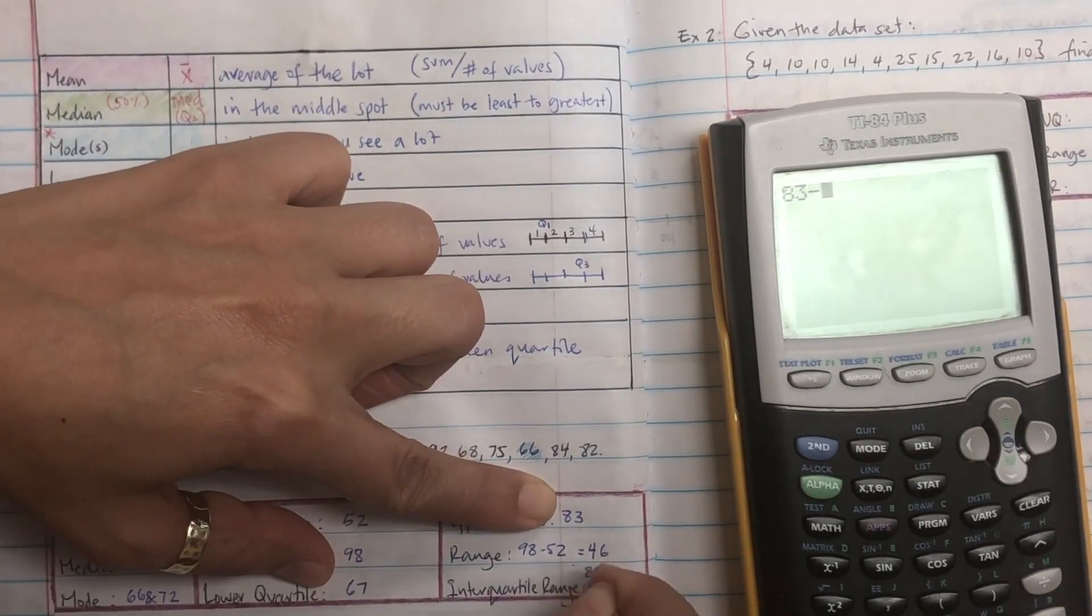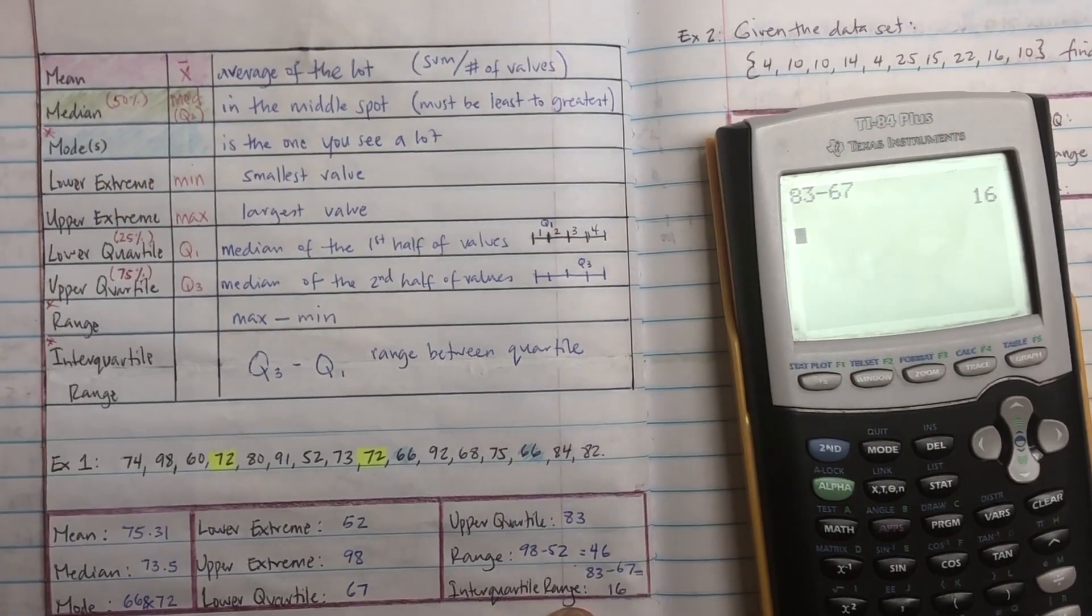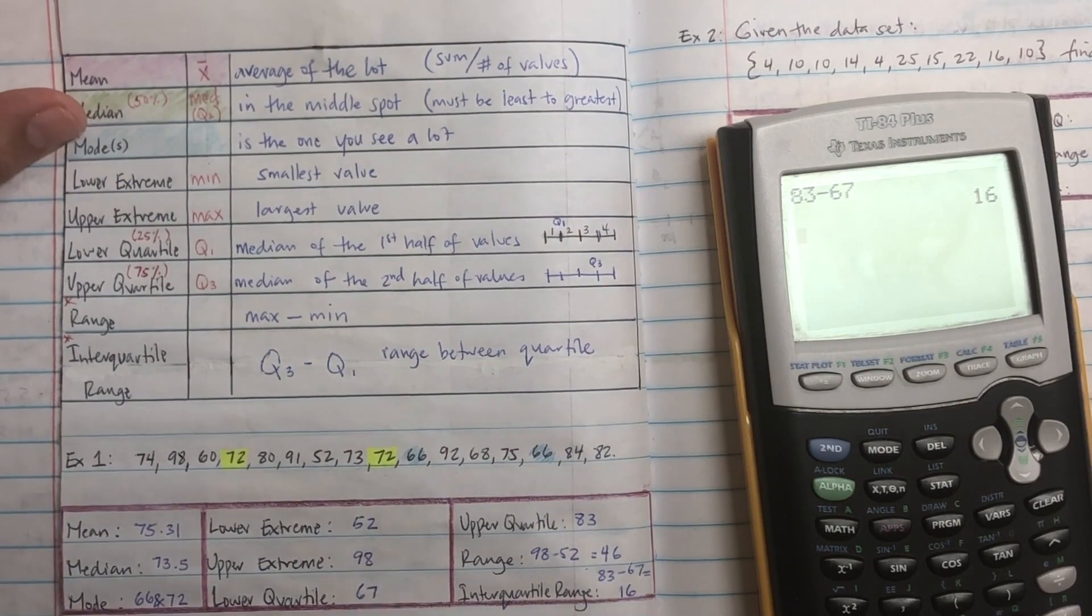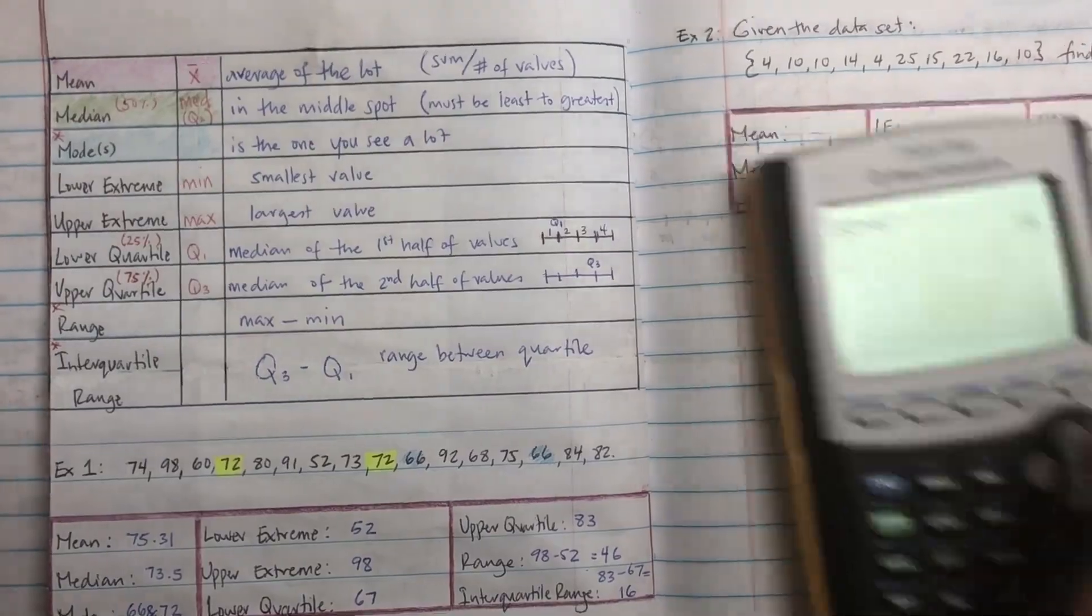So the biggest thing in this unit is understanding how to use that and also understanding the shorthand of how to read it. This is a listening check, color in lower extreme 52. Let's practice, let's practice.